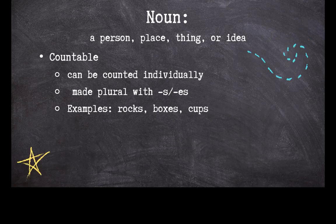Nouns can also be countable and uncountable. Countable nouns can be numbered individually. We make these nouns plural most often by adding an S or ES to the end. Rocks, boxes, and cups are all countable nouns. We can count how many rocks are under the tree or how many cups are in the cupboard.